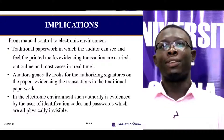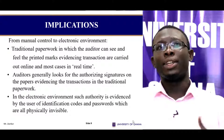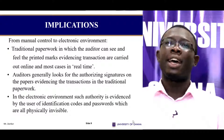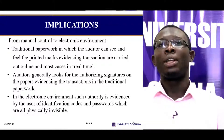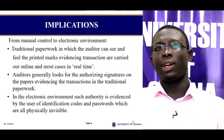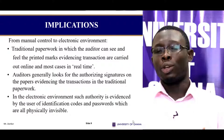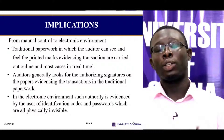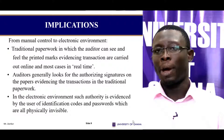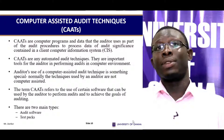What is the implication of this computerised environment on auditing? Moving from manual control to an electronic environment: in traditional paperwork auditing, the auditor can see printed marks evidencing transactions. In a computerised environment, transactions are carried out online, often in real time. Auditors traditionally look for authorising signatures on papers, but in the electronic environment, authority is evidenced by identification codes and passwords, which are physically invisible.